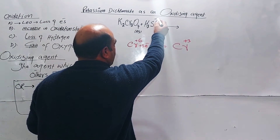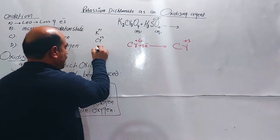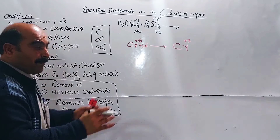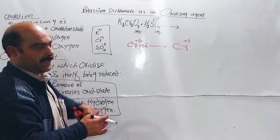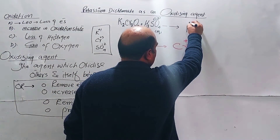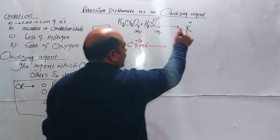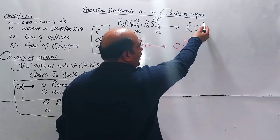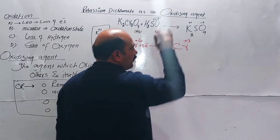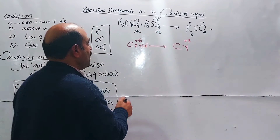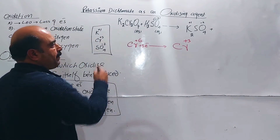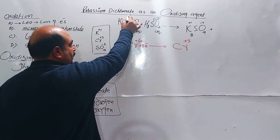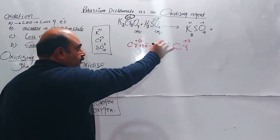The negative ions are sulfate ions — SO4 minus 2. The product contains potassium ions charged plus one, and sulfate ions charged minus two, giving K2SO4. Plus chromium ions — chromium goes from plus six to plus three state. Clear.